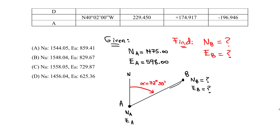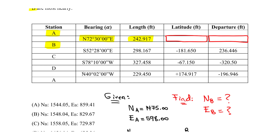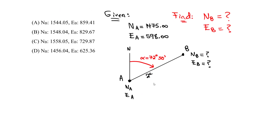To find northing at B, we take northing at A and add the latitude, giving us northing at B. To find easting at B, we take easting at A and add the departure. The latitude is always in the y-direction and the departure is in the x-direction.